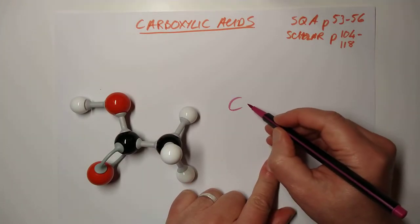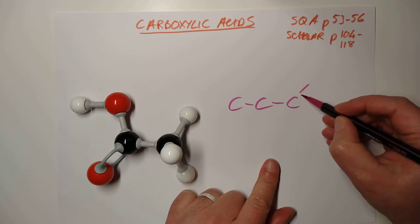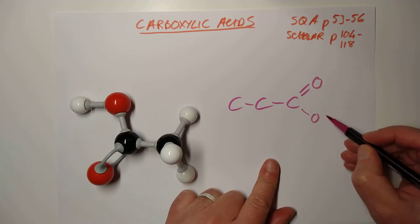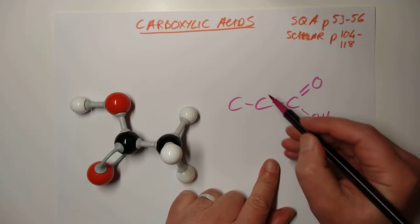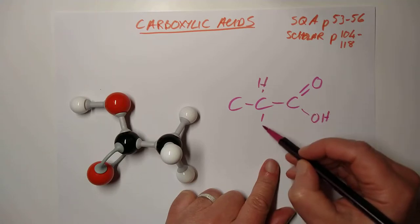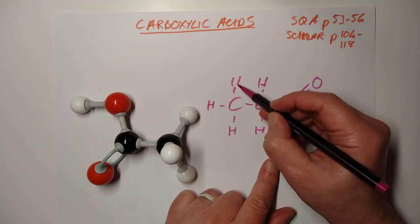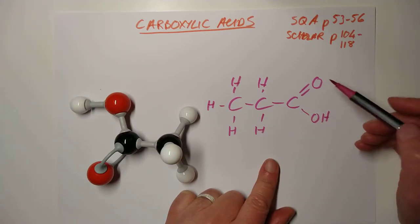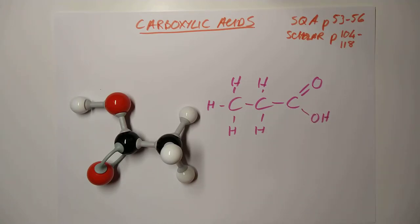They have got a number of carbons in their skeleton, and at the end of that skeleton there's a double bond to an oxygen, and an oxygen which is linked to a hydrogen. There would be H's on here as well. Does this appear anywhere else in the middle of the chain? No. It's always got to be at the end, because it takes up three out of the four bonds.